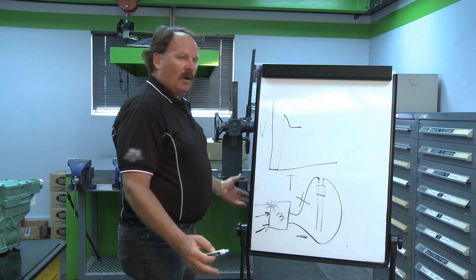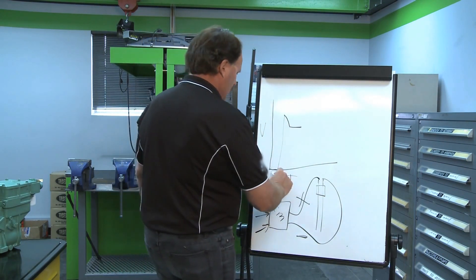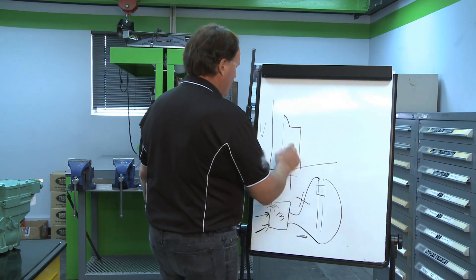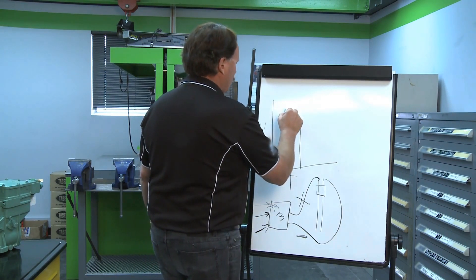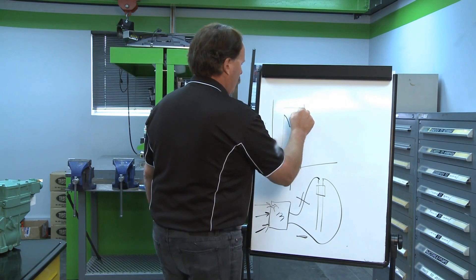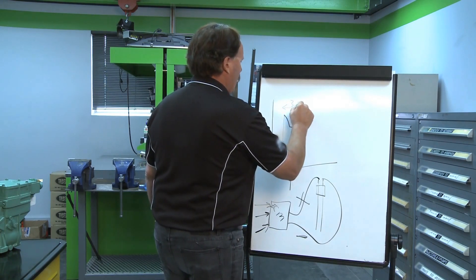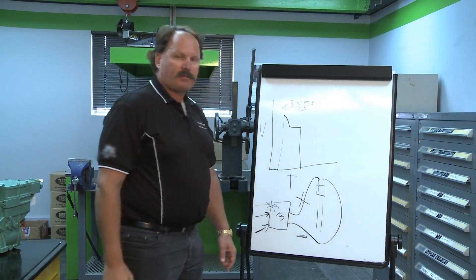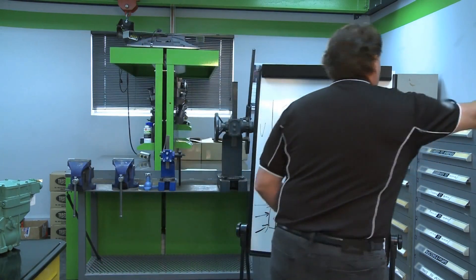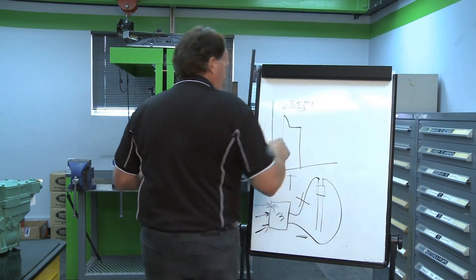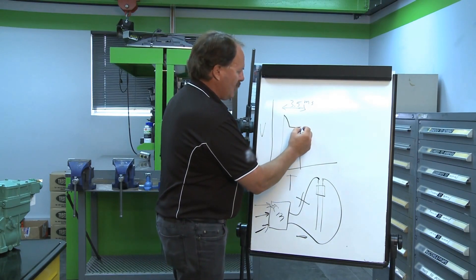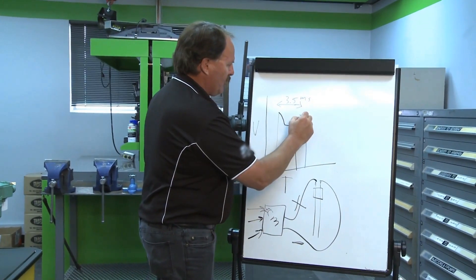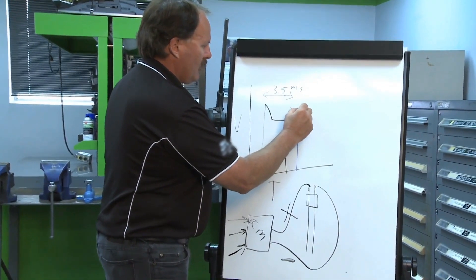So this injection signal right here — we're going to say that signal is 3.5 milliseconds (ms). What we do at Steinbauer is simply add on to that signal. It's real simple: we add 20% more to that signal.